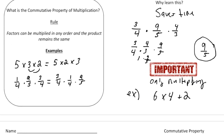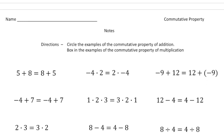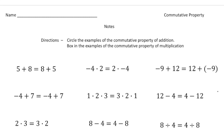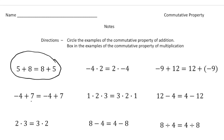Now let's identify equations that are examples of the commutative property of addition and the commutative property of multiplication. Circle the examples of the commutative property of addition and box the examples of multiplication. First: 5 plus 8 equals 8 plus 5 — the 5 and 8 are switching around, so that's a good example of the commutative property of addition. We'll circle that. Next: negative 4 plus 7 equals negative 4 plus 7 — the order did not change, so that's neither one.